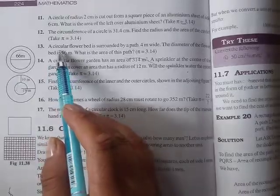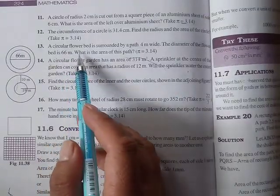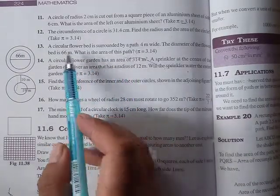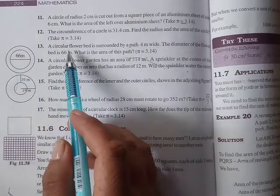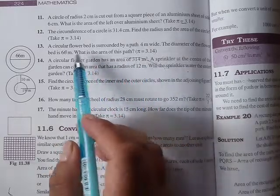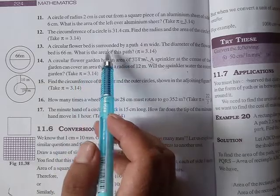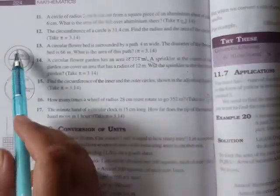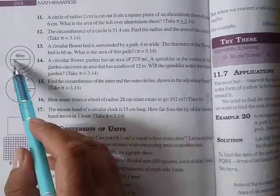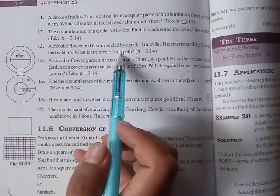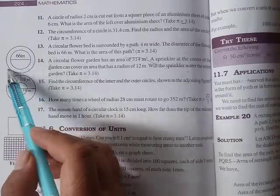Next question number 13. A circular flower bed is surrounded by a path 4 meters wide. The diameter of the flower bed is 66 meters. What is the area of this path? This is the diagram you can see. There are two parts of the diagram, but this one is the circular flower bed which is a circular shape, and the surrounding of the 4 centimeter wide.